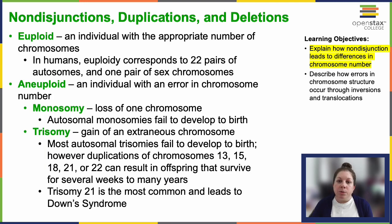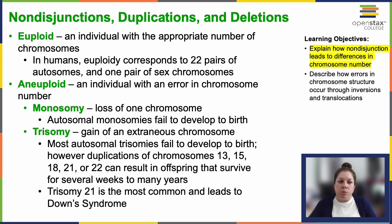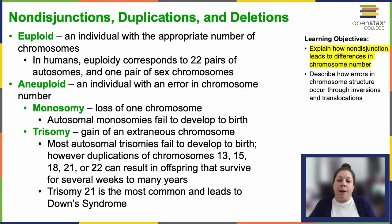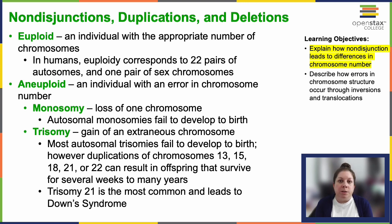Individuals with the correct number of chromosomes for their species are referred to as euploid. 'EU' is a prefix that can mean good or right. In humans, that would be 22 pairs of matching autosomes and one pair of sex chromosomes. In males, those aren't a perfect match — we have an X and a Y — while in females it would be two X chromosomes.